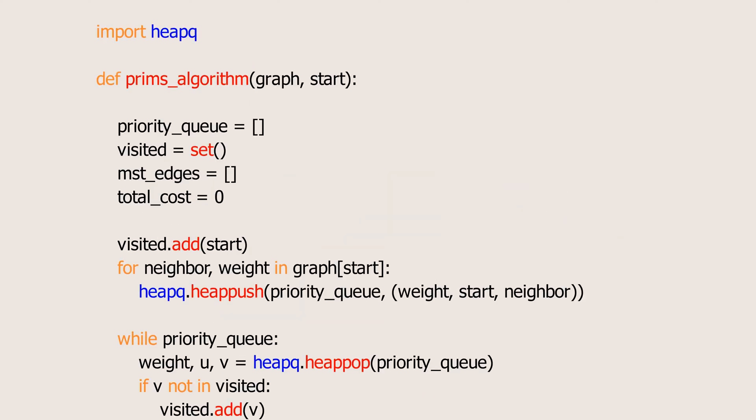Let's look at the Python code for this algorithm. First, we import the heap queue module, which helps us implement the priority queue. Then we define the function, which takes the graph and the starting node as input parameters, and initialize some variables to work with.